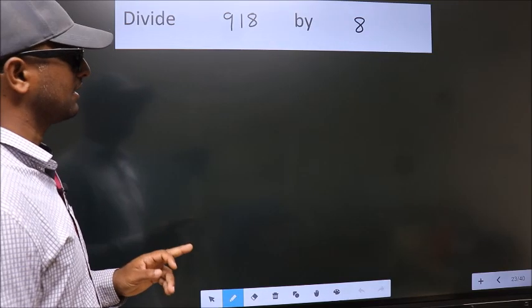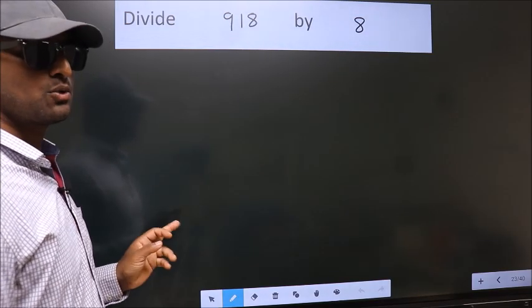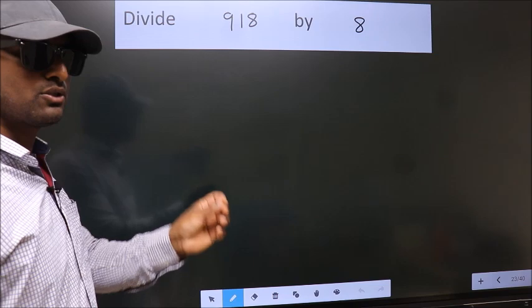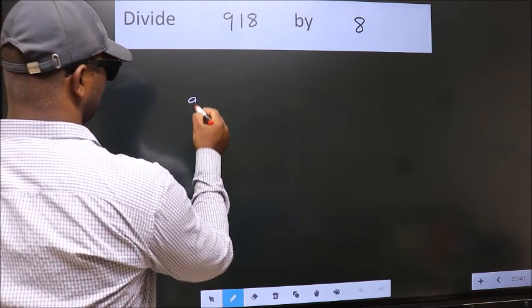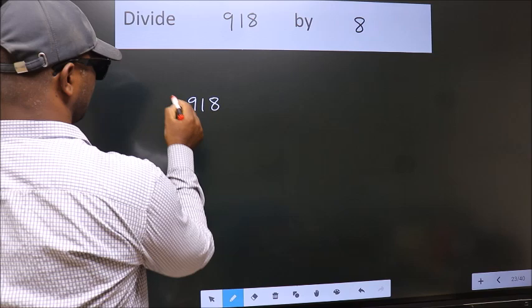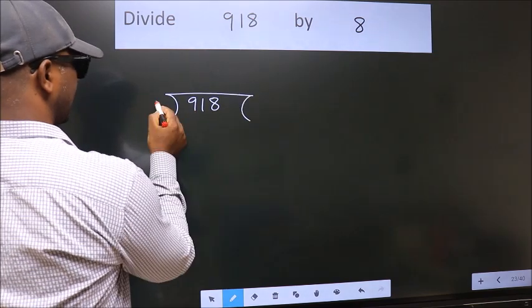Divide 918 by 8. To do this division, we should frame it in this way. 918 here, 8 here.